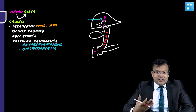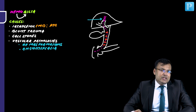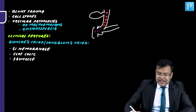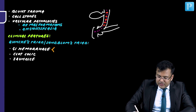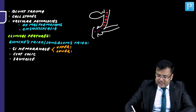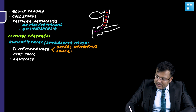The manifestations are GI bleeding, clot colic, and jaundice. This triad is known as Quincke's triad, also known as Sandblom's triad. The components are: GI hemorrhage (upper GI manifesting as hematemesis, lower GI manifesting as malena), clot colic, and jaundice.